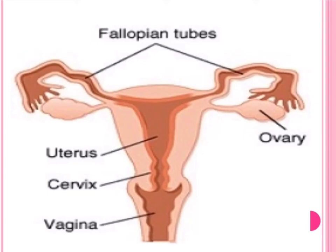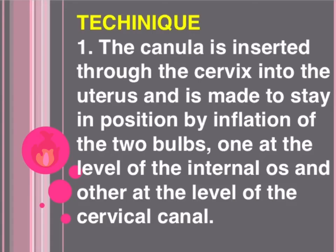Technique step one: the cannula is inserted through the cervix into the uterus and kept in position by inflation of two bulbs — one at the level of the internal os and the other at the level of the cervical canal. Step two: contrast media is injected into the cannula to confirm the findings of cornual end block.